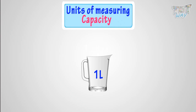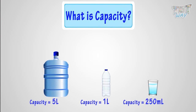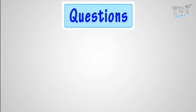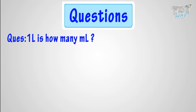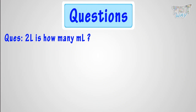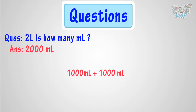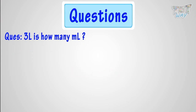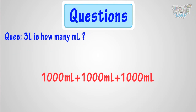So, kids, now you have a fair idea of what is capacity and the units for measuring capacity. Now, let's move on to some questions. One liter is how many milliliters? It is 1,000 milliliters. Two liters is how many milliliters? One thousand milliliters plus one thousand milliliters equals two thousand milliliters. Three liters is how many milliliters? It is 1,000 plus 1,000 plus 1,000, that is 3,000 milliliters.